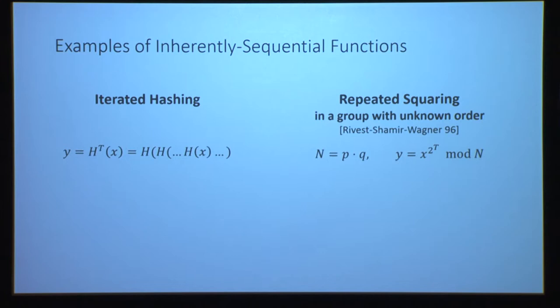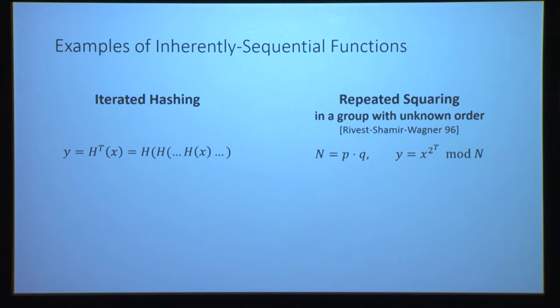The second example is repeated squaring in a group of unknown order — for example, multiplication mod n where n is the product of two large primes. The input is x and the output is x to the power of 2 to the t, computable with t squarings. As Ron mentioned, if you know the factorization of n, you can compute the output faster; but if the factorization is unknown, the best we know how to do is t sequential squarings.